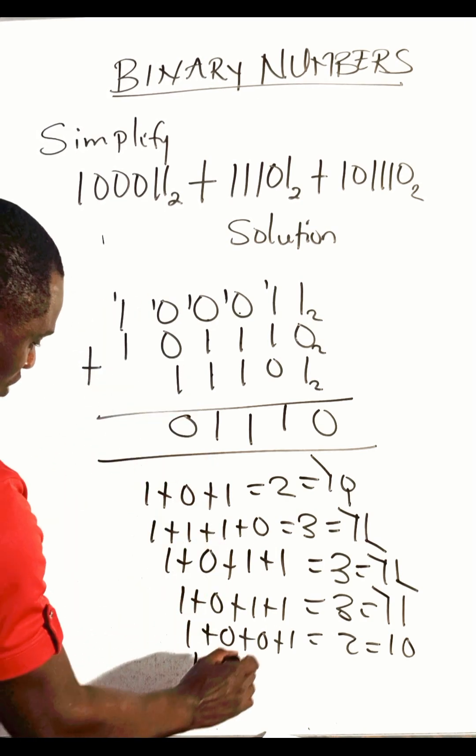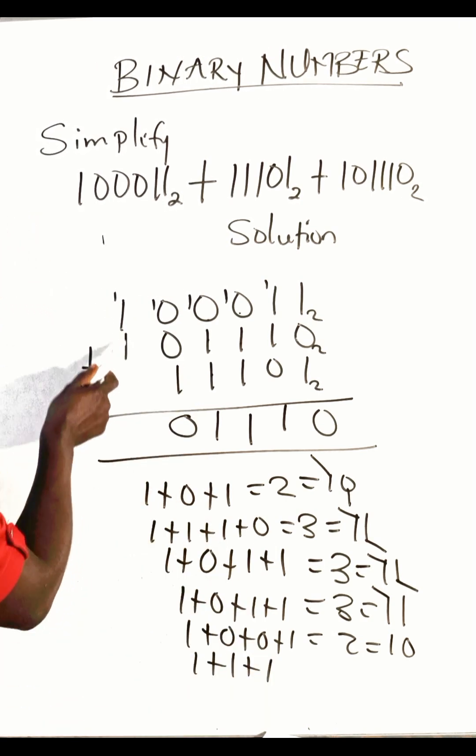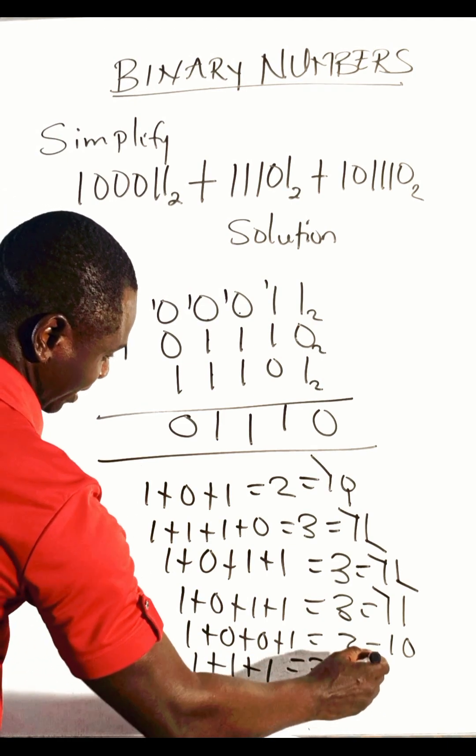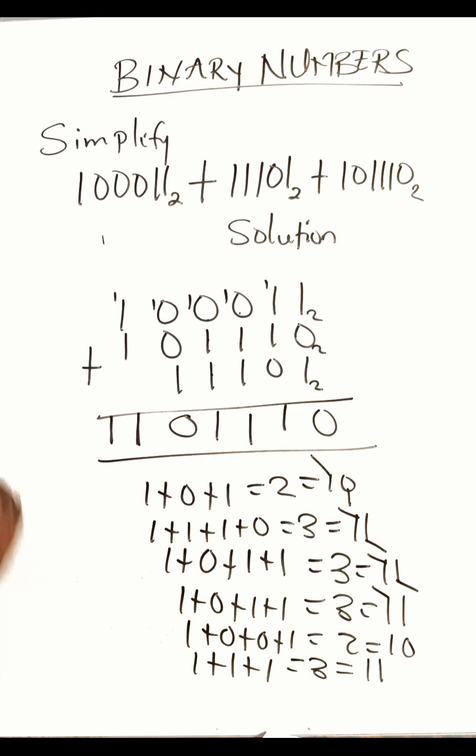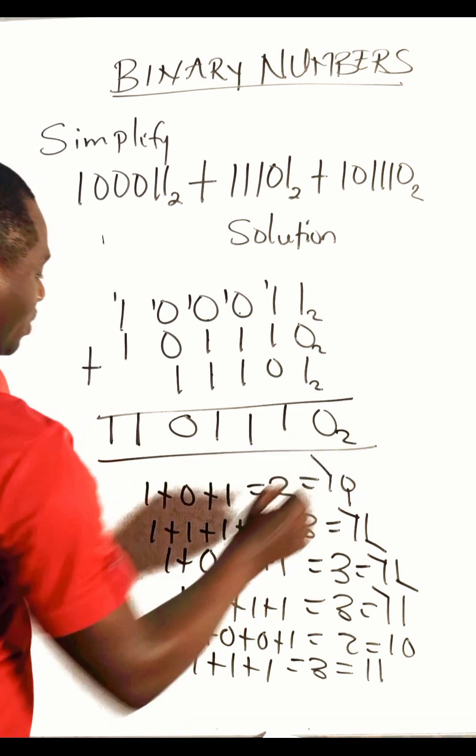Finally, one plus one plus one gives us three, and three is eleven. At this point we write down all of them, and this is what we have: one one zero one one one one zero in base two.